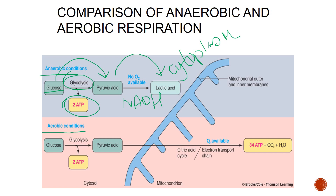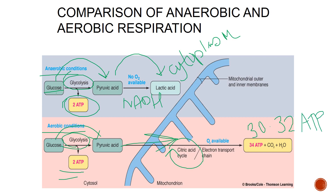Under aerobic conditions, when oxygen is present, glucose still undergoes glycolysis, producing two ATP and two molecules of pyruvic acid. Those then cross the mitochondrial membrane, enter the citric acid cycle to make acetyl-CoA, and carry on to the electron transport chain, where oxygen is the final electron acceptor. This yields somewhere between 30 to 32 ATP, along with carbon dioxide and water as byproducts — carbon dioxide is carried in the blood and exhaled, and water is also produced.